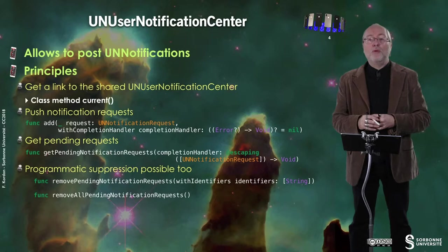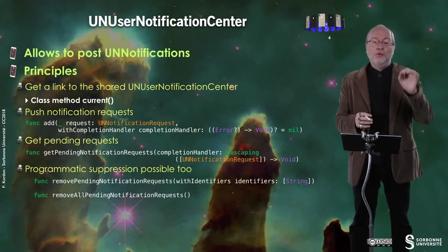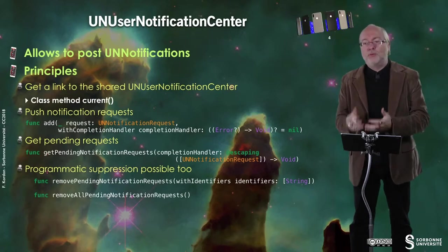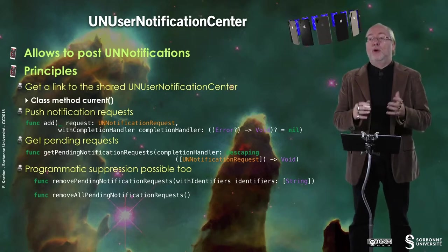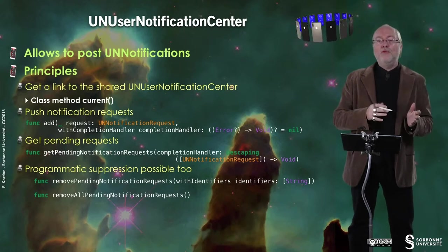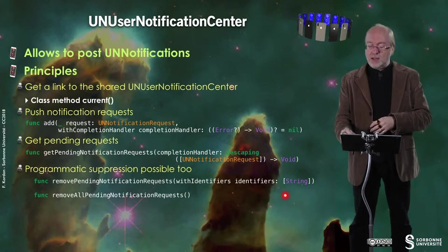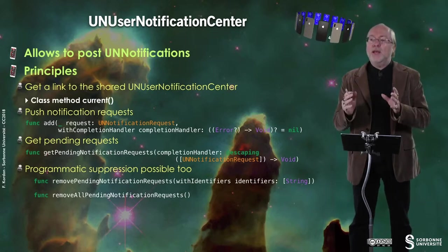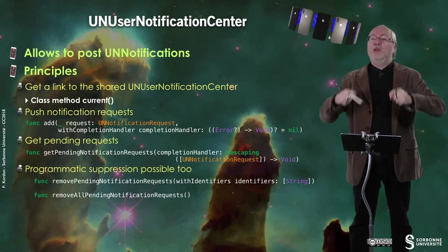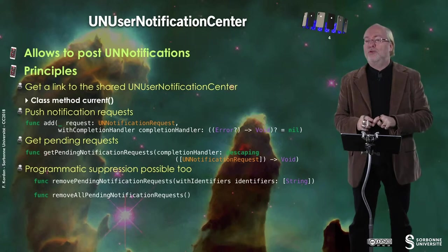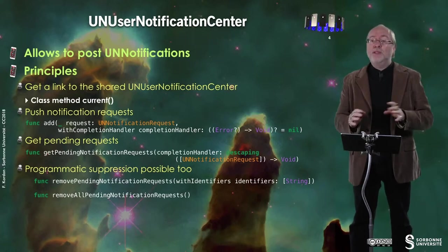You can also have programmatic suppression. You can do it from the notification center as a user, but you can do it programmatically. You have a way to remove a given type of pending request — you have an array where each element is a string specifying a category of actions you want to remove. Or you can remove all the pending notification requests. Let's now have a look at what a UN notification request is.